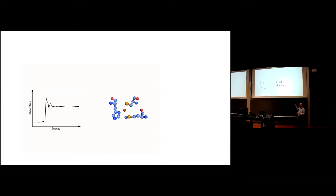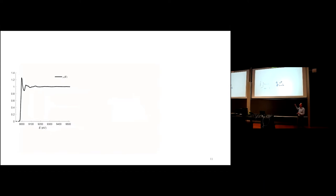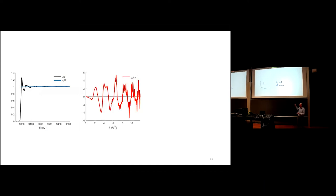I will mainly be talking about the EXAFS part because it looks the most interesting. We have the full normalized spectrum, and the most interesting part is that flat region. To highlight the features that tell us something about the system, we fit a spline function to simulate the background signal and then divide by that background to give what we call the chi signal. These waves going up and down are the consequence of this interference pattern of backscattered waves. It's basically a zoom in on the flat curve, which in reality is not completely flat — it actually contains waves, and the further from the edge, the more noise.